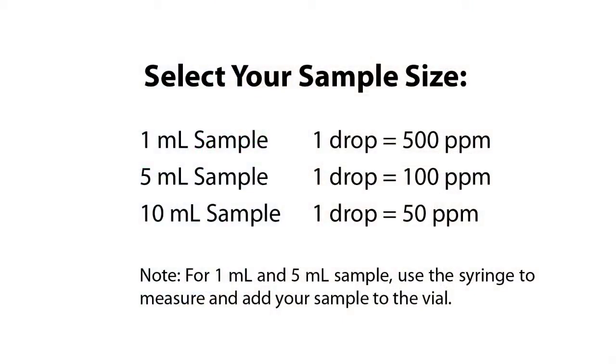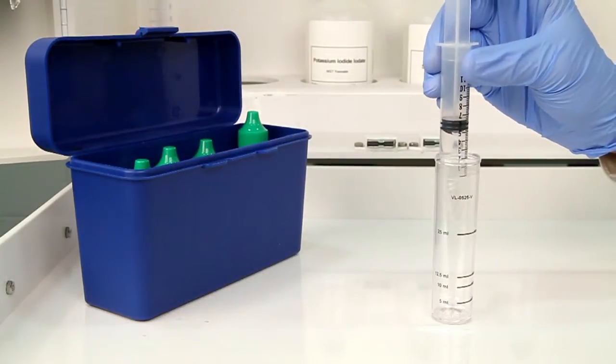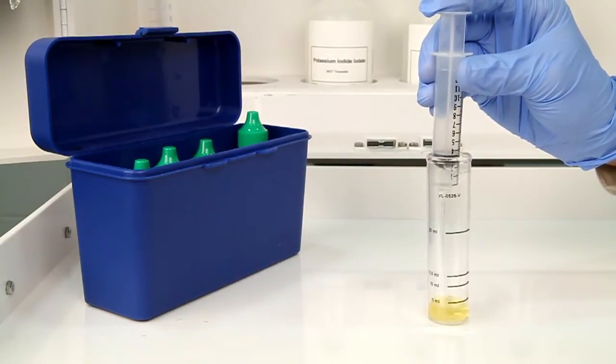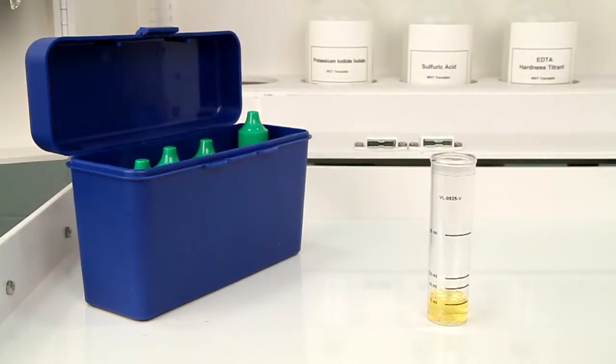The next step is to choose your sample size based on your desired drop equivalency. Use the syringe to accurately measure your sample and then add the sample to the vial. A yellow color indicates available chlorine dioxide. Swirl the vial to mix.